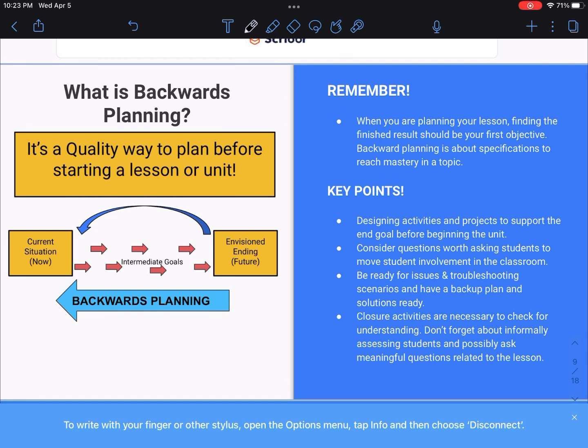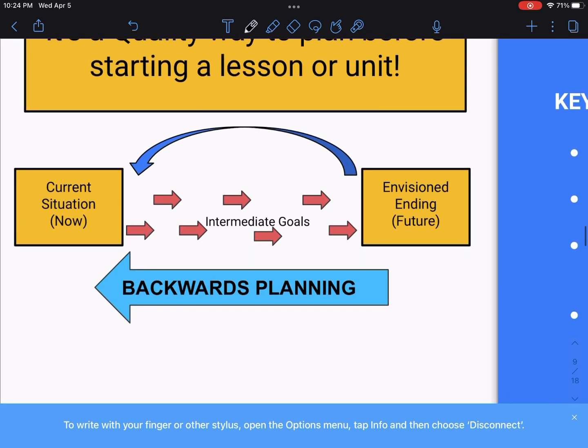Now let's talk about backwards planning. Backwards planning is the top quality way to plan before starting a lesson or unit. Think of it, we have this little picture here. We have our ending over here and our current situation which is happening right now. So in order to do backwards planning, you're going to start here and work your way back. So these intermediate goals are little activities that you would have your students do. Basically, you're going to plan your assessments, your test, whatever you want at the end goal of your students to learn, and then you come up with interactive activities.